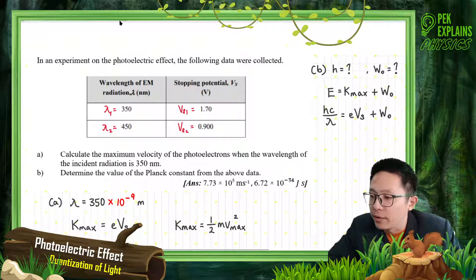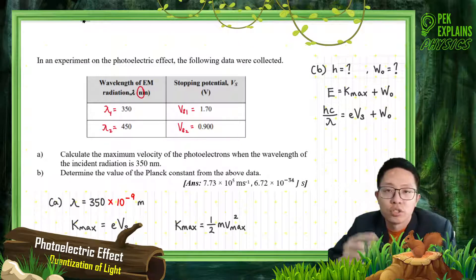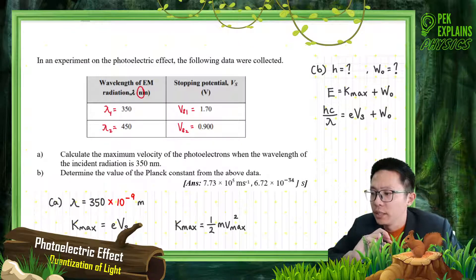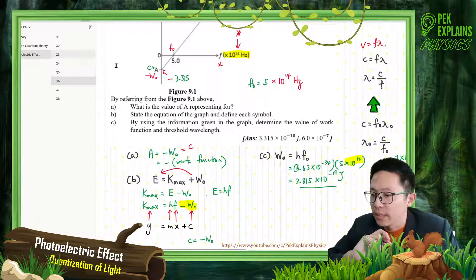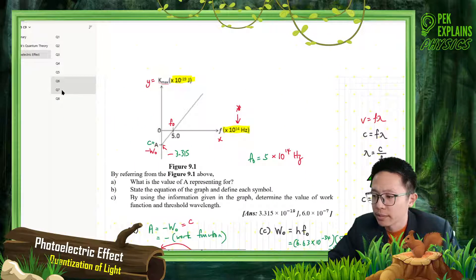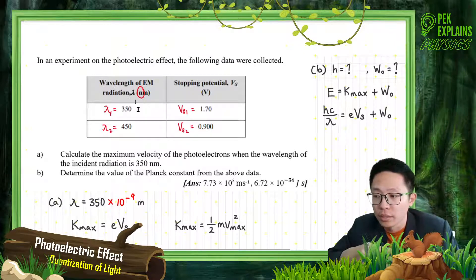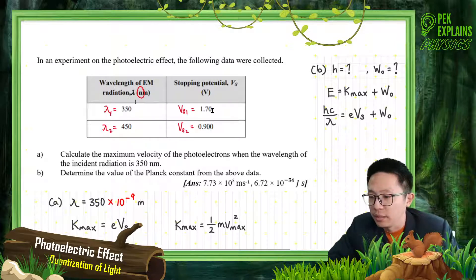Remember, this is very important — look at the unit, always check the unit. Check the unit, check the exponent, like the previous example. These are the things people are careless about. So please check the unit: this is in nanometer, not in meter. So when you substitute into the equation, you must convert all to SI unit. The stopping potential is in volt, and volt is already SI unit.